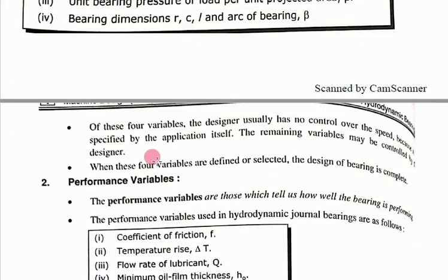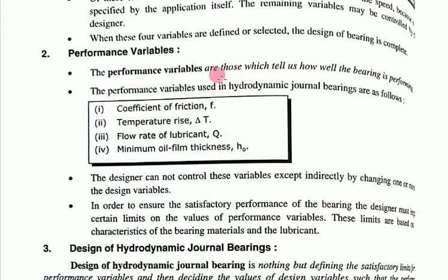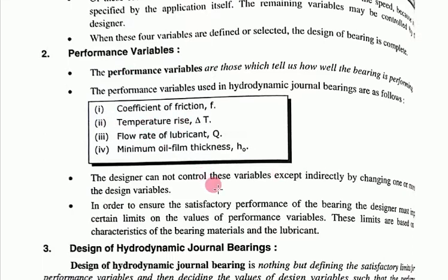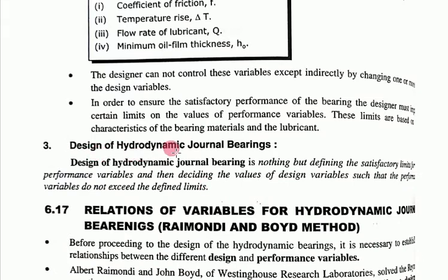Performance variables are those which tell us how well the bearing is performing. These four variables decide how the bearing performs well — that is why they are called performance variables. The designer cannot control these variables except indirectly by changing one or more of the design variables. By controlling the design variables, you can vary the performance variables.